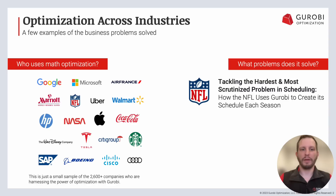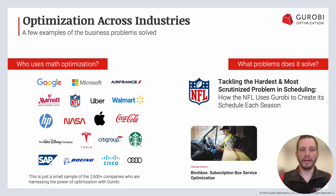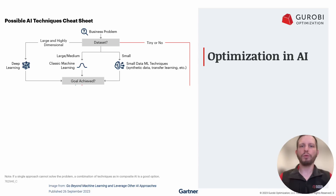A couple of examples I want to quickly highlight that specifically show machine learning and optimization working together: one case study on our website is Decision Lab optimizing scarce water resources, combining machine learning and optimization, as well as subscription box service optimization with Birchbox. These are really cool case studies — I'd suggest you take a look. And actually there are a lot of cases of using machine learning and optimization together; I only highlighted a couple.